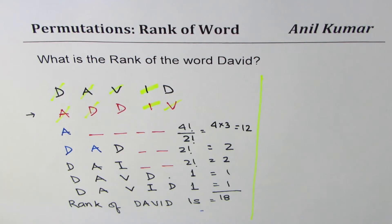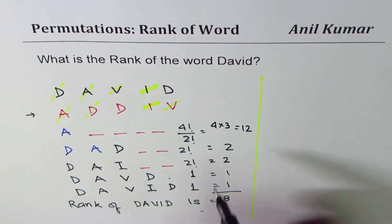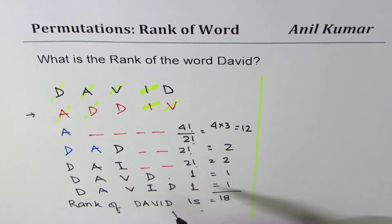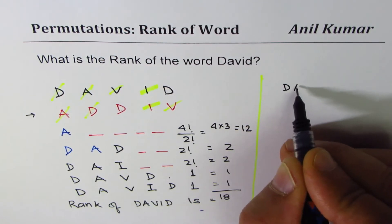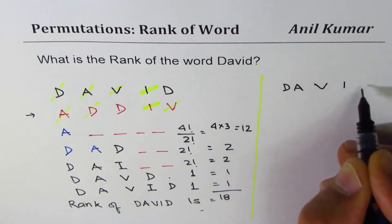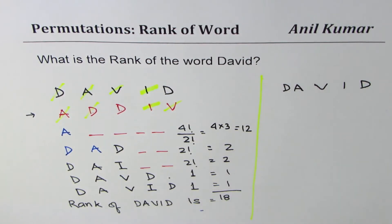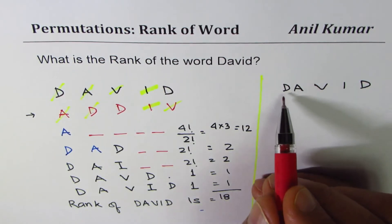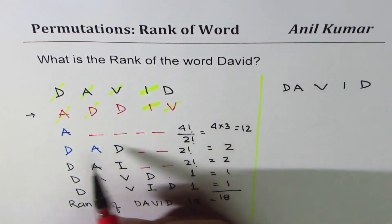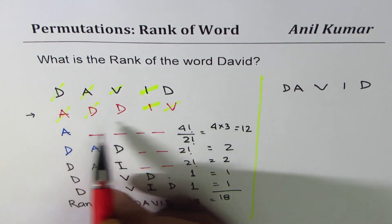That's one method, which is very systematic but may take time, especially with longer words with more letters and more repetitions. I'll now show you a different method — a shortcut method — to do the same thing. You have to link these two methods so you understand what is really happening. Let's again begin with DAVID: D-A-V-I-D.